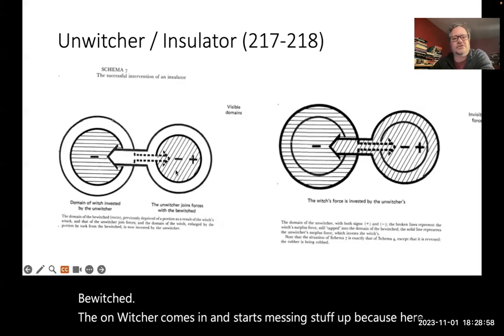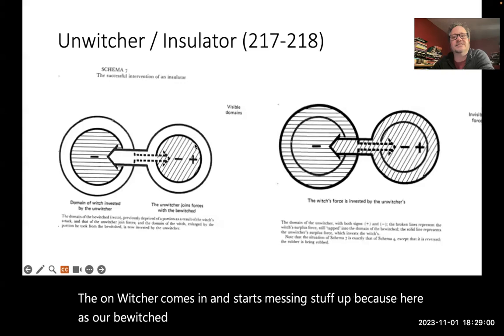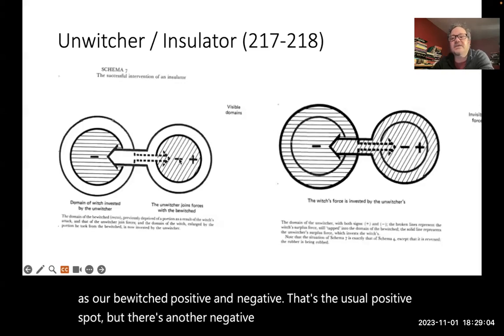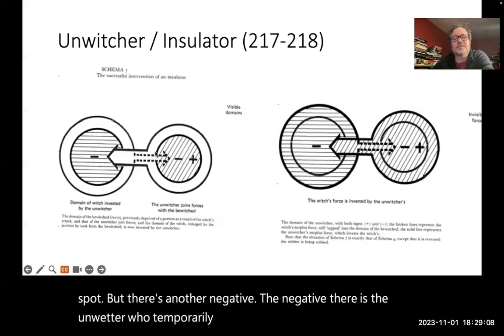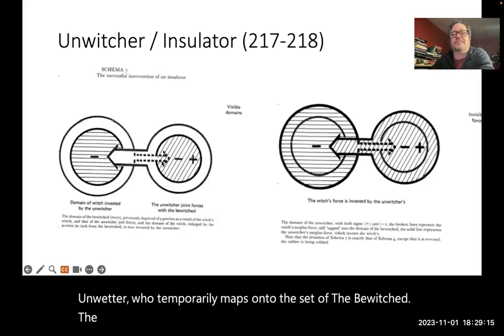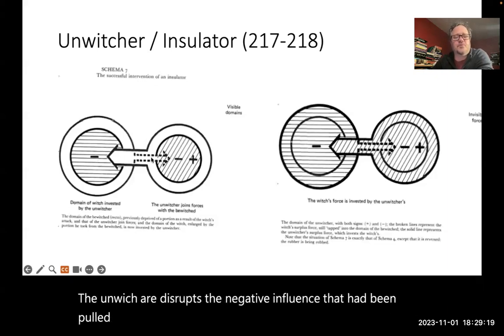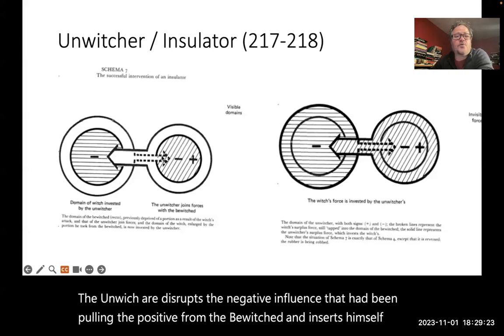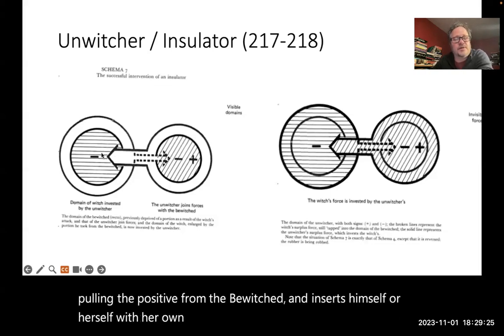The unwitcher comes in and starts messing stuff up. Because here is our bewitched. Positive and negative. That's the usual positive spot, but there's another negative. The negative there is the unwitcher, who temporarily maps onto the set of the bewitched. The unwitcher disrupts the negative influence that had been pulling the positive from the bewitched. And inserts him or herself with her own negative influence into the domain of the witch.